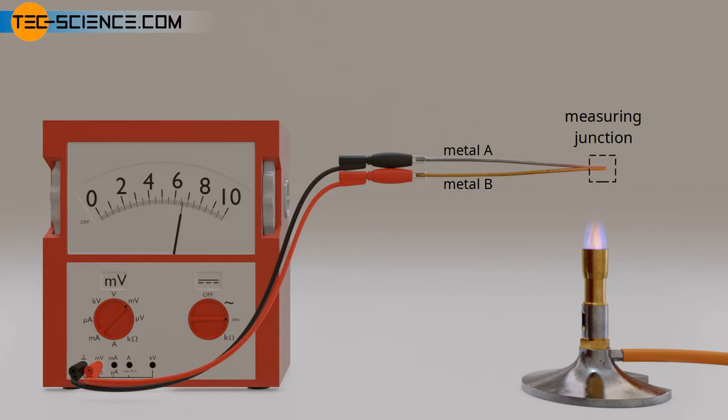The other ends lead to the so-called reference junction, called cold junction, the temperature of which is usually ambient temperature. There is now a temperature gradient between the measuring junction and the reference junction, and thus between the ends of the respective wires. This results in a thermoelectric effect with the consequence of an electrical voltage.